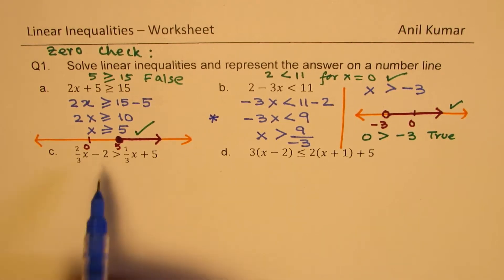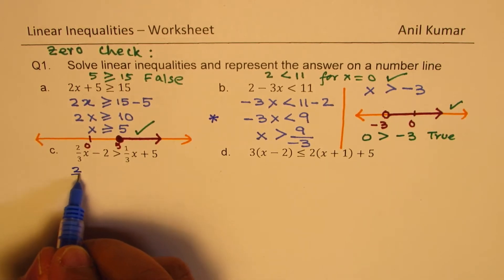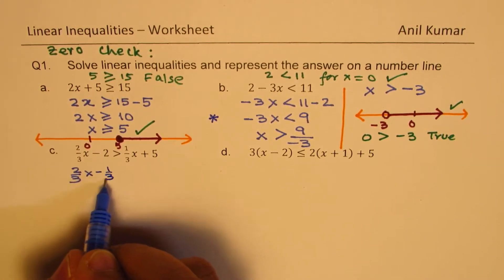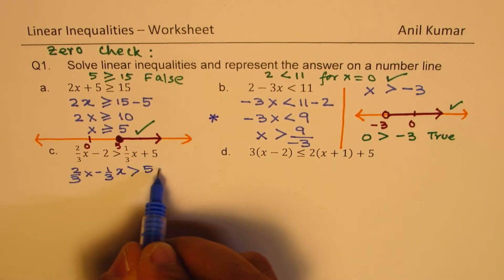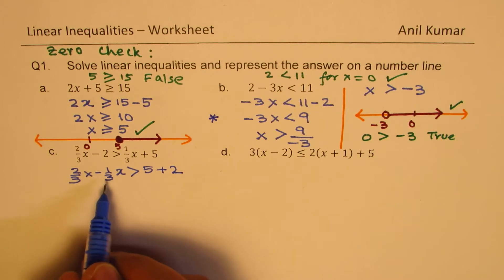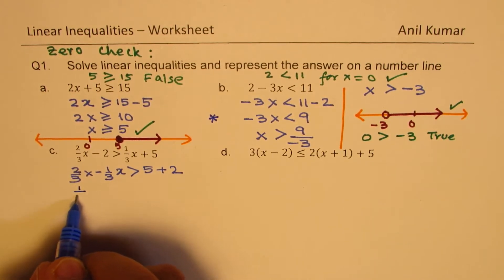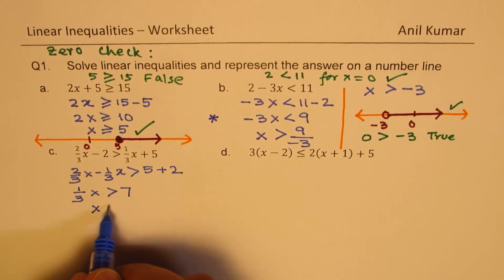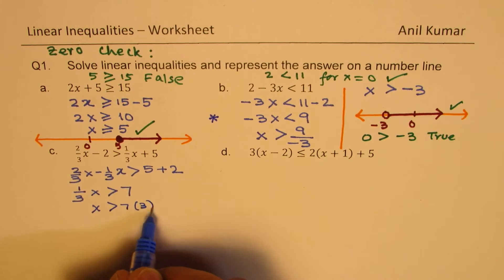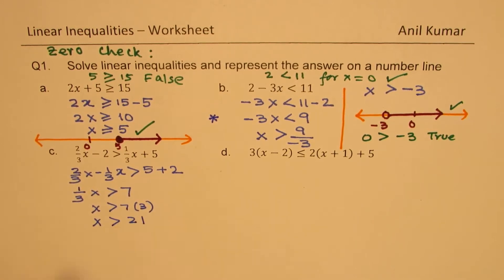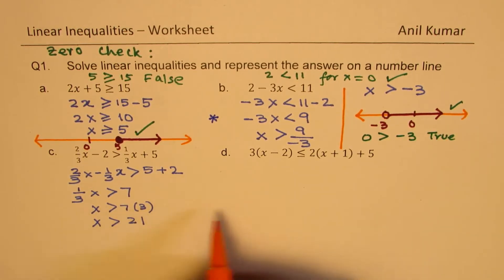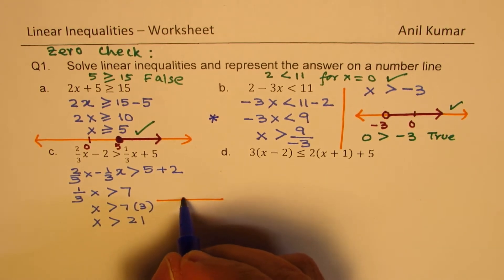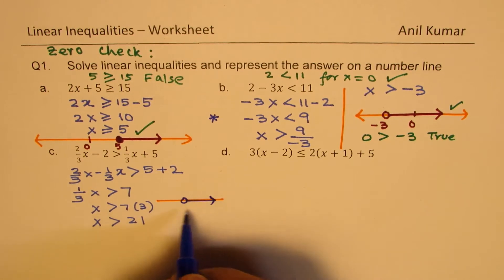Now we have some fractions. We bring x terms together: 2/3x minus 1/3x, and constants on the other side: 5 plus 2. Now 2/3 minus 1/3 is 1/3, so we get 1/3 x is greater than 7. Cross-multiplying gives x is greater than 7 times 3, so x is greater than 21. On a number line, this is shown with an open circle at 21 with an arrow to the right.